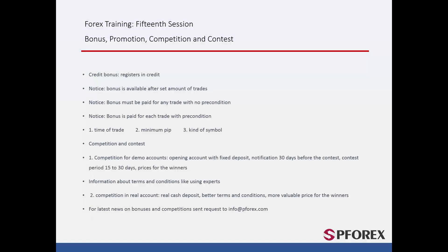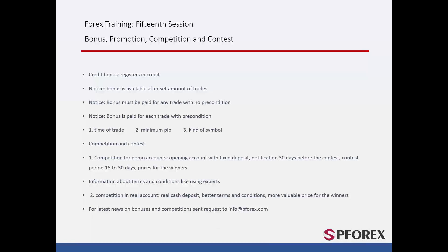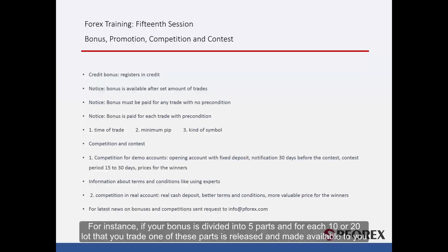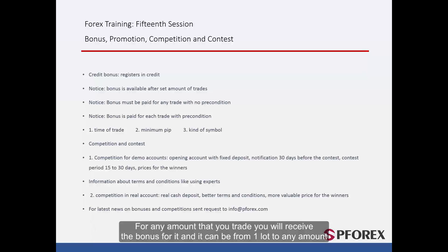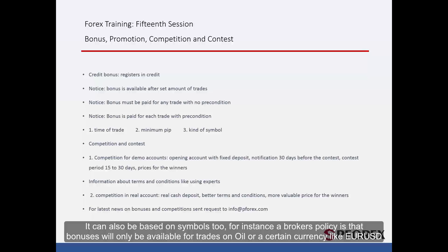With a credit bonus, your account will be credited and you can use it to do trades. Bonuses become available after a certain number of transactions — for instance, if your bonus is divided into 5 parts, for each 10 or 20 lots traded, one part is released and made available to you. There is also a bonus with conditions based on pip, time of trade, and symbol. For example, a broker's policy may state that a trade must last more than 5 minutes and a transaction must be over 5 pips, or that bonuses are only available for trades on oil or a specific currency like EUR/USD.